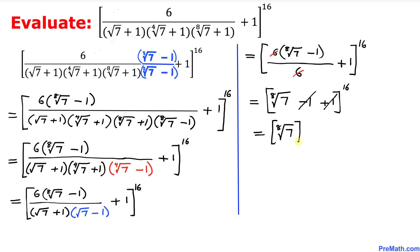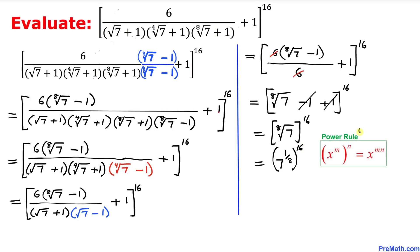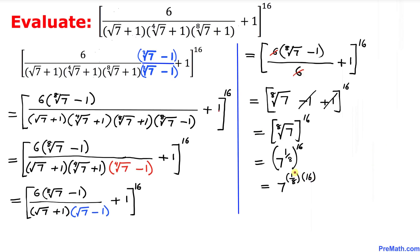We know that the eighth root of 7 can be written as 7 to the power 1/8, and then to the power 16. Now let's use the power rule, so this can be written as 7 to the power 1/8 times 16.